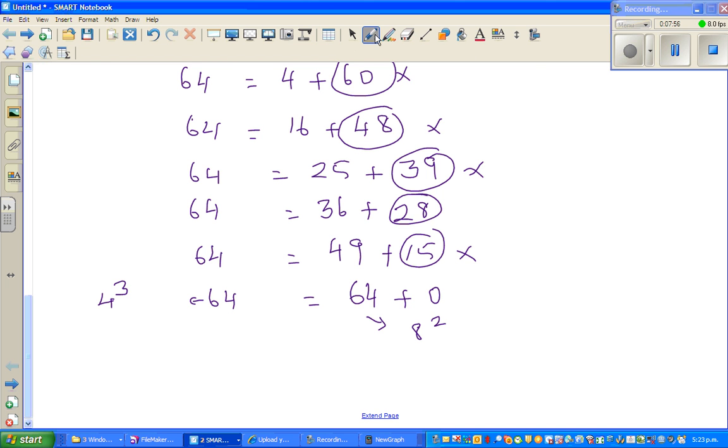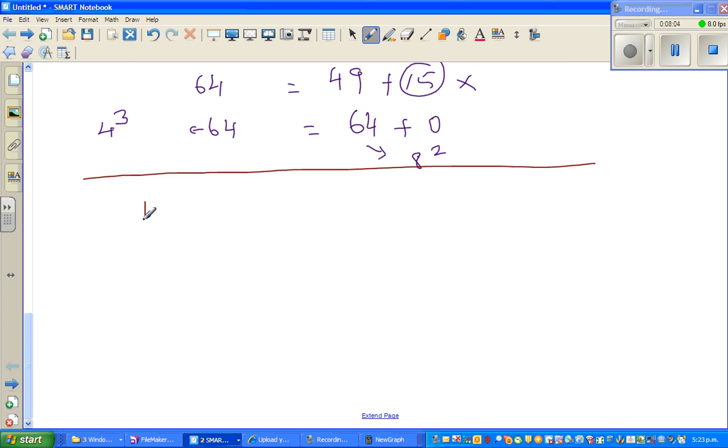So let's start with 125. If you go 125, it's 1 plus 124. This is not working because 124 is not a perfect square. 125, the next square number is 4 plus 121.